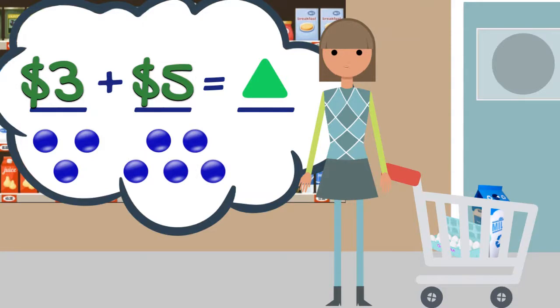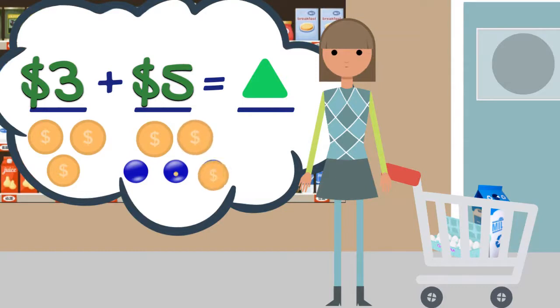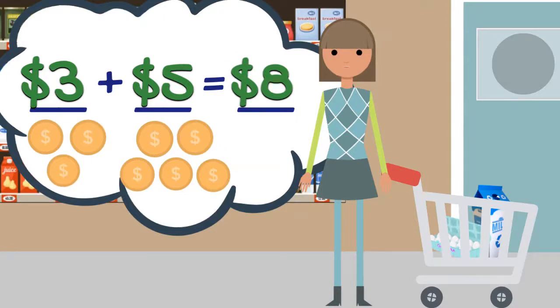Now, count them with me to find the total. Ready? One, two, three, four, five, six, seven, eight. These two items cost $8. We just used a drawing to show that three plus five equals eight.